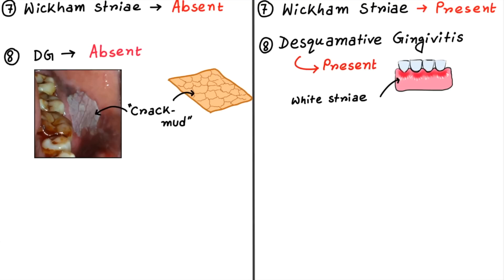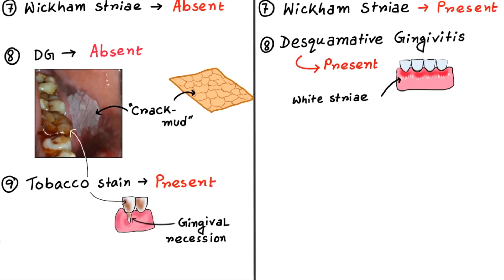Next thing is tobacco stain. In case of Leukoplakia, as most of the patients are tobacco chewers or smokers, you can see brown stain on the teeth. Sometimes gingival recession is also visible. This tobacco stain is mostly absent in case of Lichen Planus.